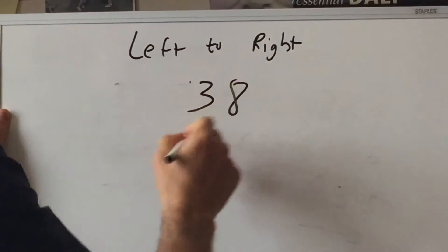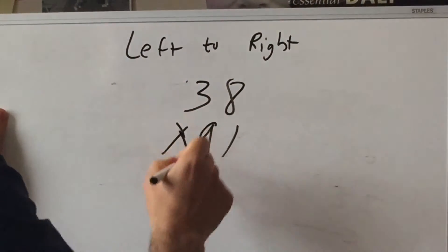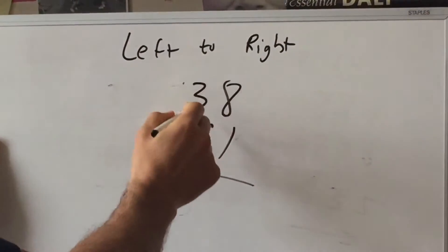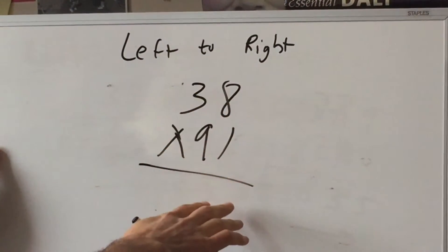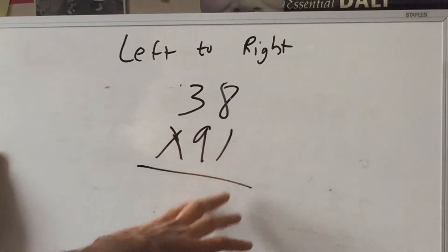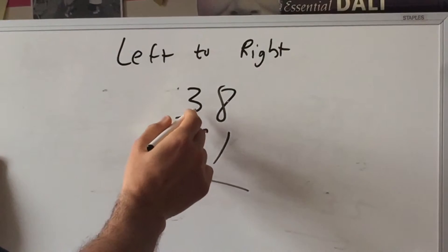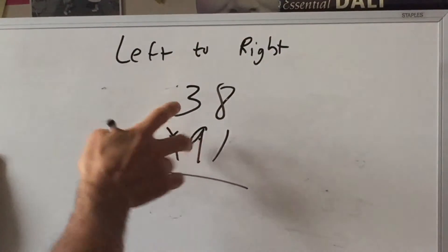So let's say we decide to go with the nine times the thirty eight. Now of course you can do this normally, one times eight, one time, we're not going to do it that way. So let's do the ninety times the thirty, so that's twenty seven hundred.